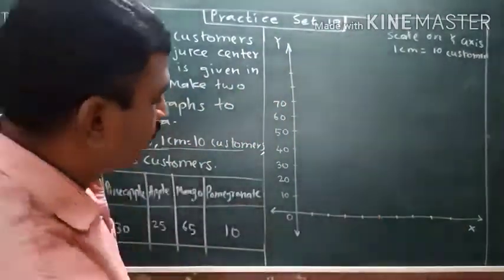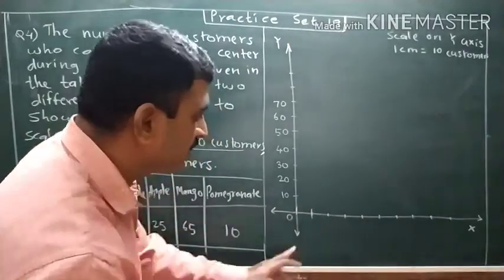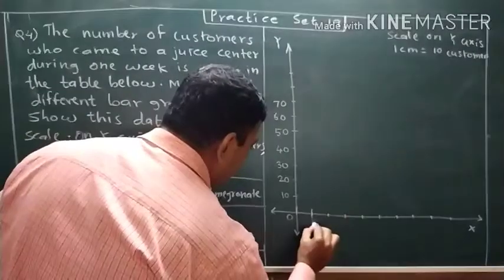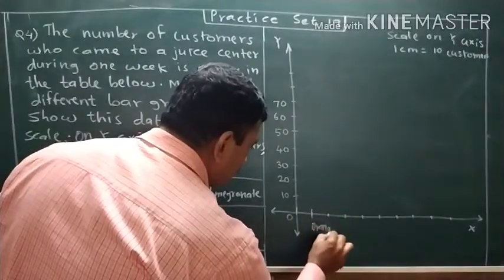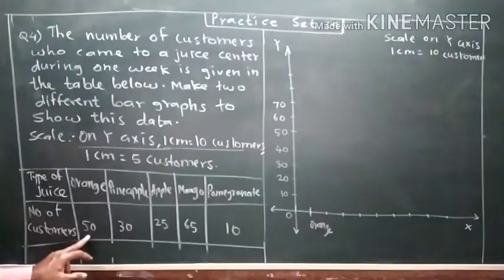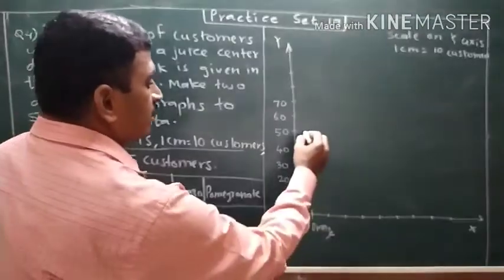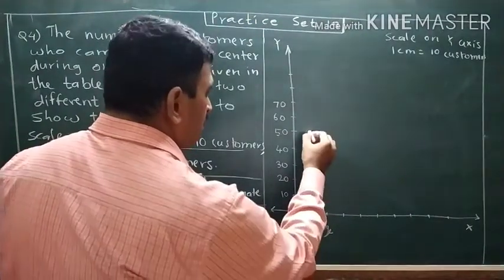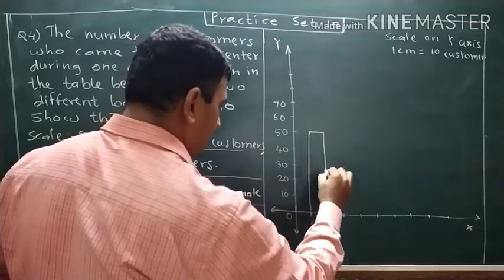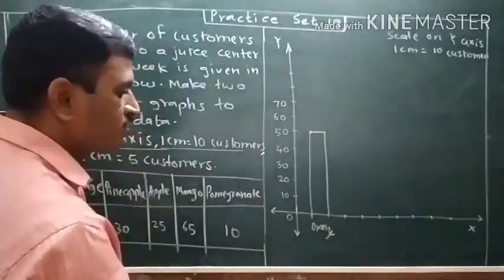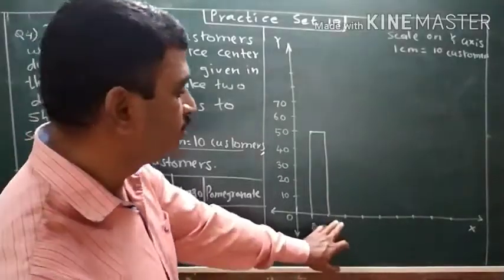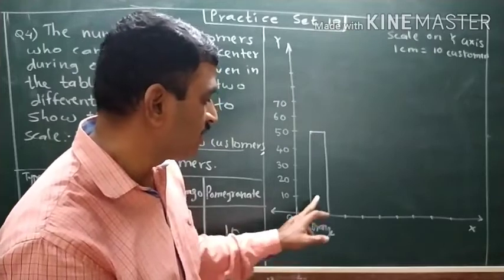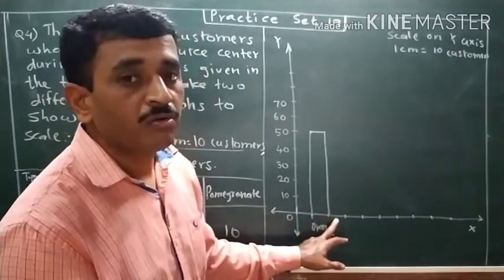Now on the x-axis, we are giving a one centimeter distance, and then we are going to draw a bar graph for orange. We have to draw a bar for orange. Now orange is finished. We will give one centimeter distance, because we give a one centimeter gap, so the bar also has one centimeter distance.